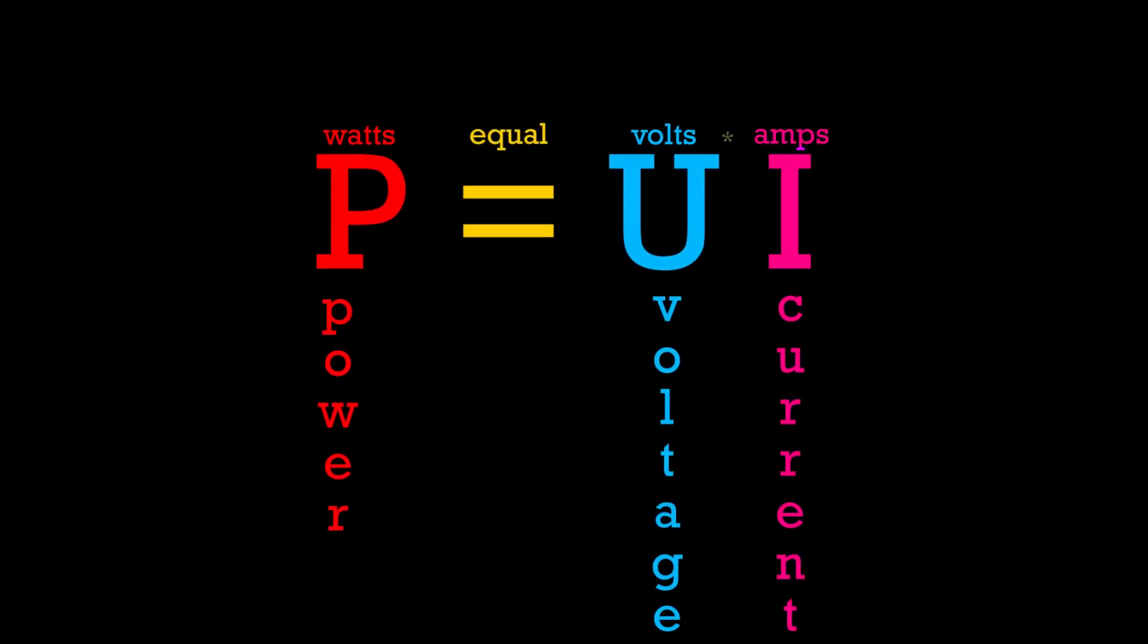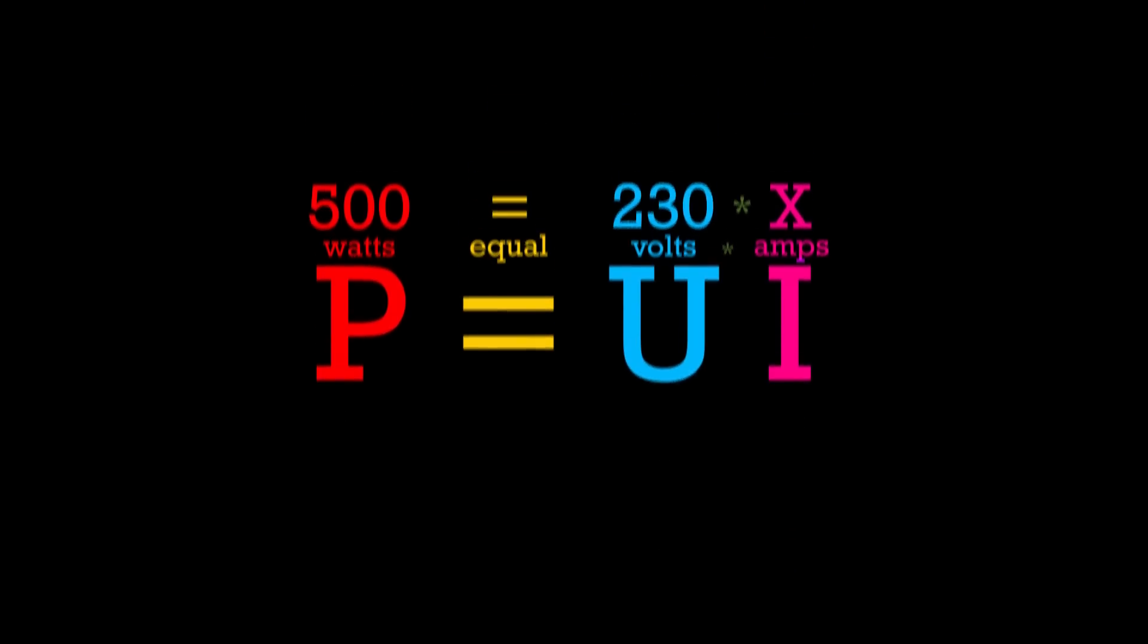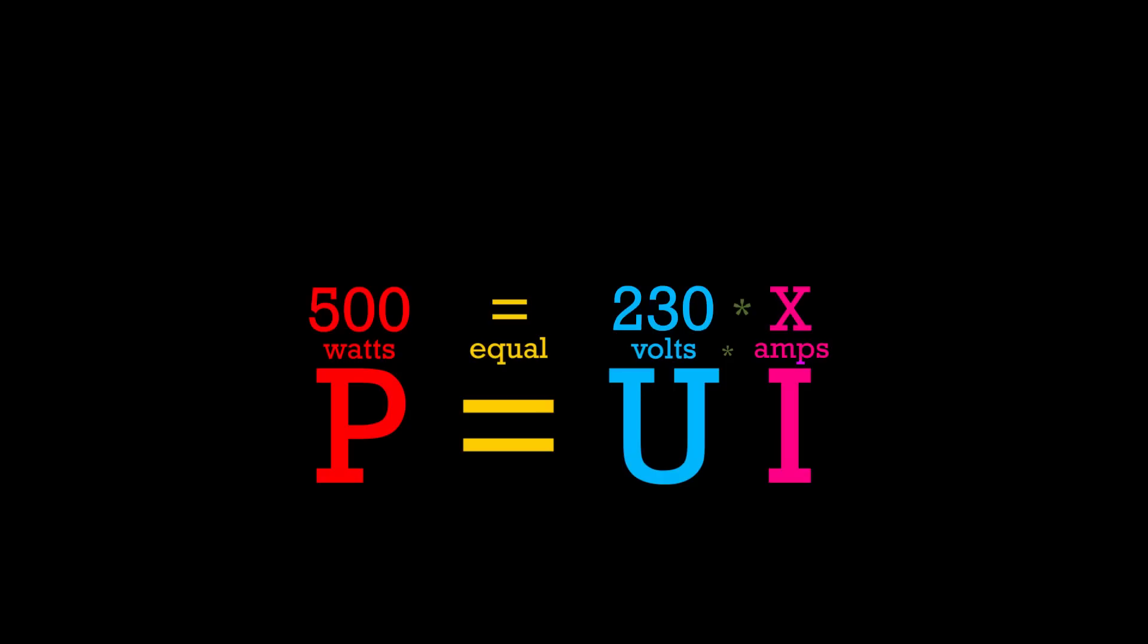We'll put in 500 for the power. Then let's use the EU standard for the volts this time, so put in 230 for the voltage. The current is X, because that's the value we want to calculate. In other words, we want to know how big of a current our 500-watt lamp will produce with 230 volts of electricity.